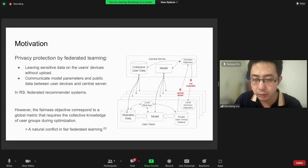To overcome this privacy issue, a feasible solution is adopting federated learning, as we've just seen in the last work. The basic idea is that we maintain the sensitive data on the user devices without uploading it, and each device only communicates the model parameters and public shareable data with the central server.